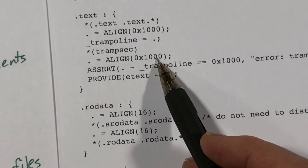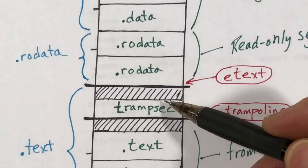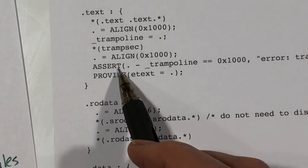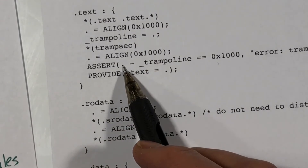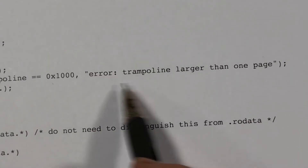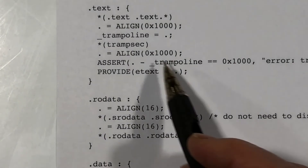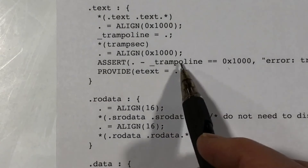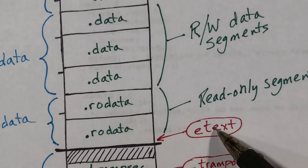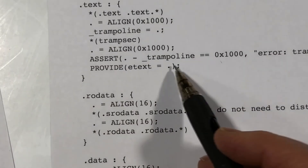Then we have another align, so we skip up to the next page boundary again. Then it asserts that the current location minus trampoline is exactly one page. If it's not, we print out an error message that the trampoline code was larger than one page — it won't be, but we check that right here by doing the subtraction. And then finally we define the symbol etext at the current location.